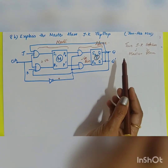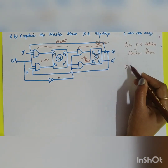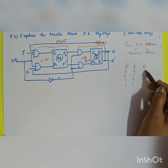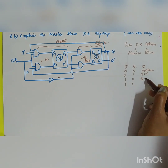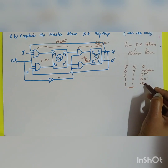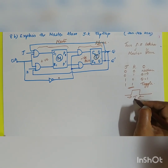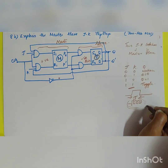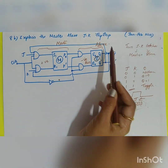Before going further, you should know why we use the master-slave JK flip-flop. In the truth table of the JK flip-flop — 00, 01, 10, 11 — for J=K=1, the output toggles. For the time period T, the output keeps toggling between zero and one. This is called the race-around condition, and to avoid it, we use the master-slave arrangement.